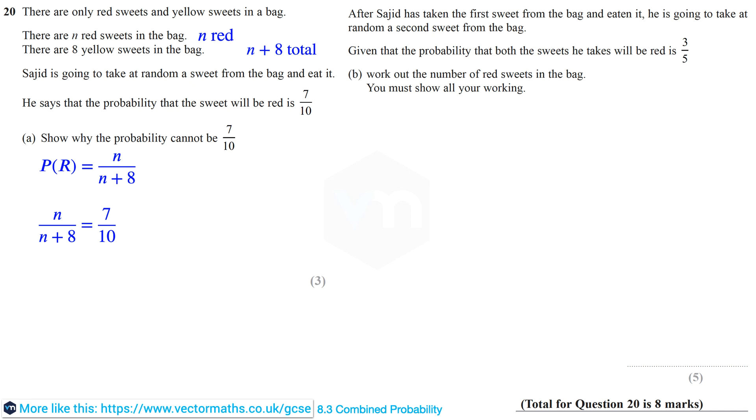Now if we cross multiply we obtain eventually that 3N equals 56, and therefore N equals 56 over 3. But this equals something that's not a whole number, in fact it's 18.6 recurring. However, N has to be a whole number because it represents the number of red sweets. And so he cannot be correct.